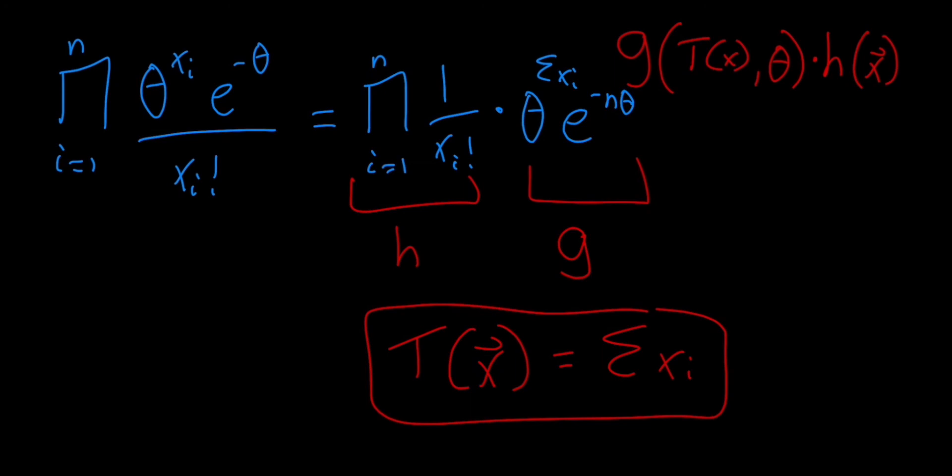But just by factoring it like we did here, it lets you discover a sufficient statistic. So we didn't come into this problem testing if the sum of the xi is sufficient. We factored it and that's kind of what popped out.